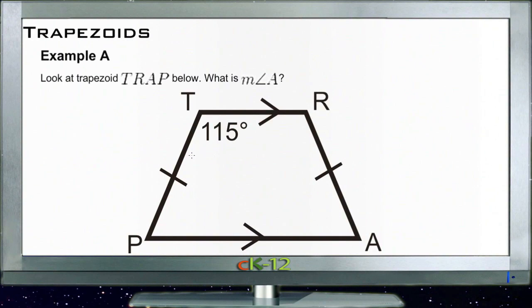Alright, let's take on these example questions for our trapezoid lesson. We have here for Example A the trapezoid TRAP, and it says what is the measure of angle A down here. Now we know...